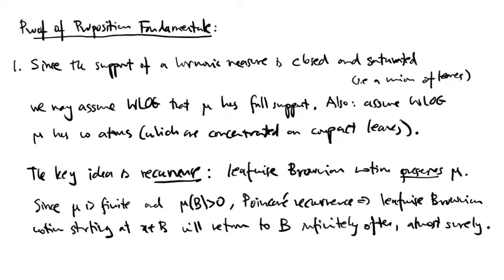Furthermore, an atom of mu is always concentrated on a compact leaf for which the conclusion is vacuous. So again, without loss of generality, we may assume that mu has no atoms.